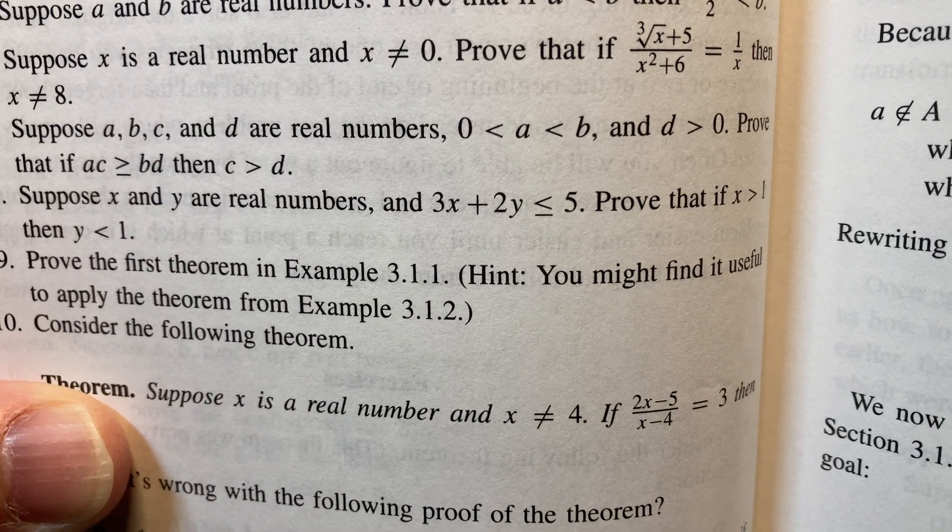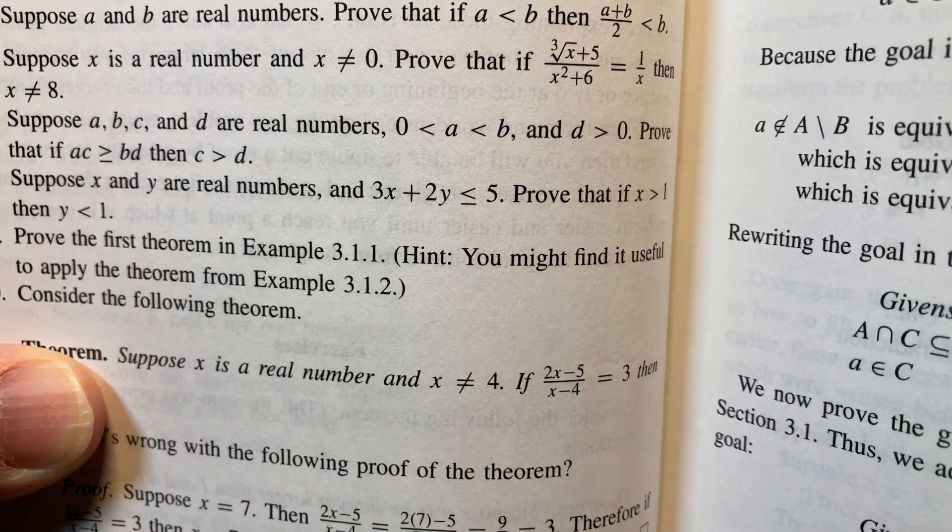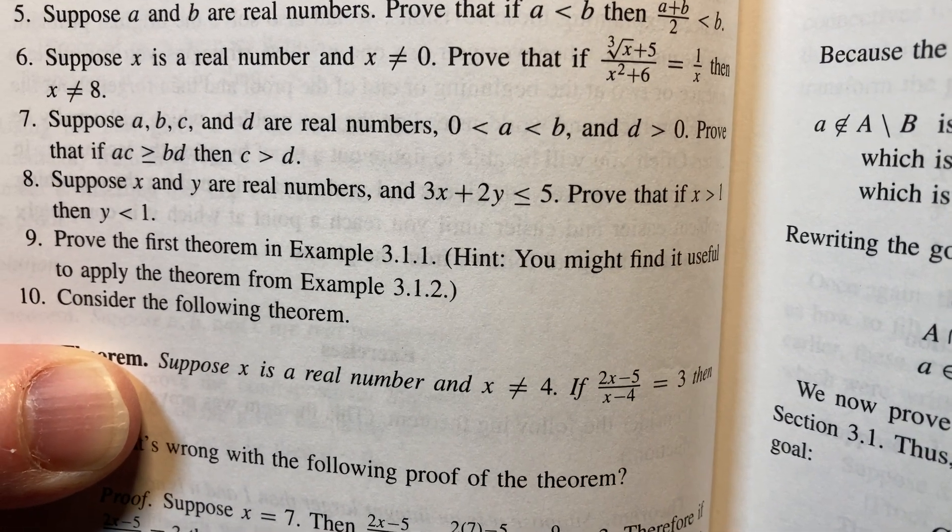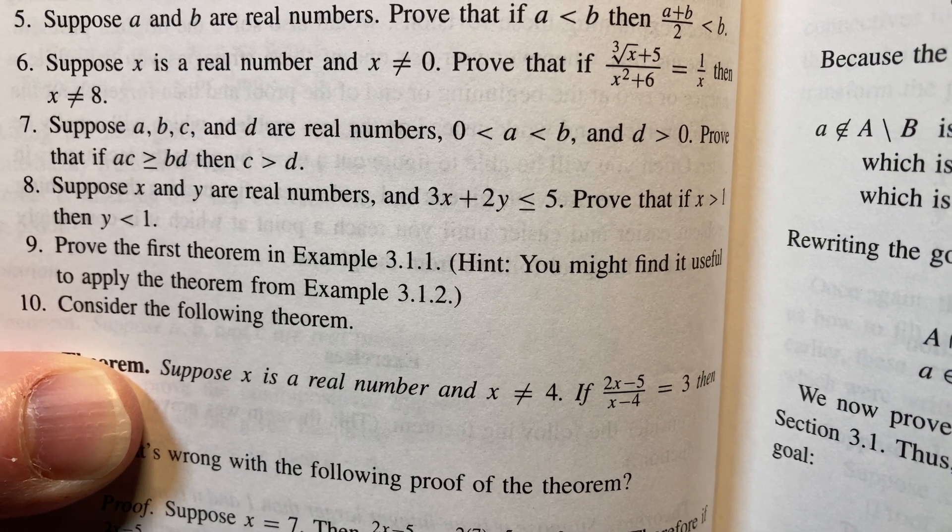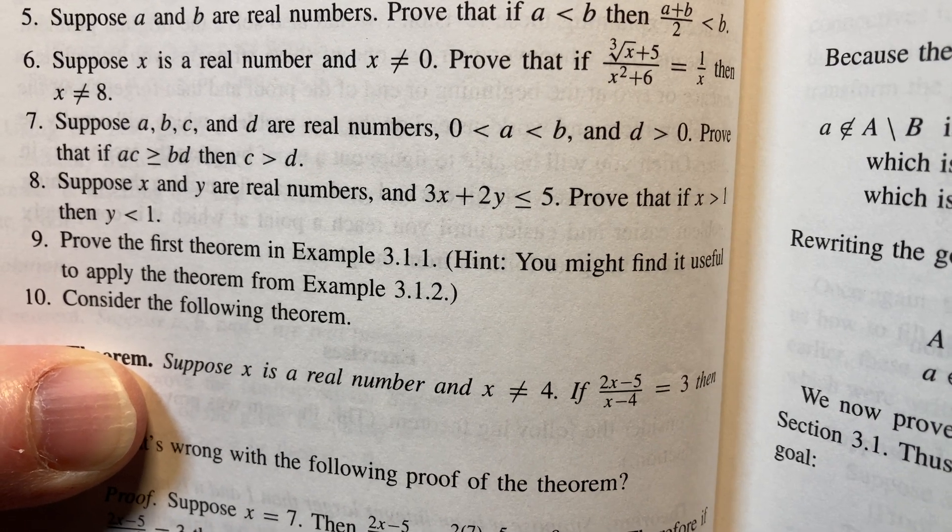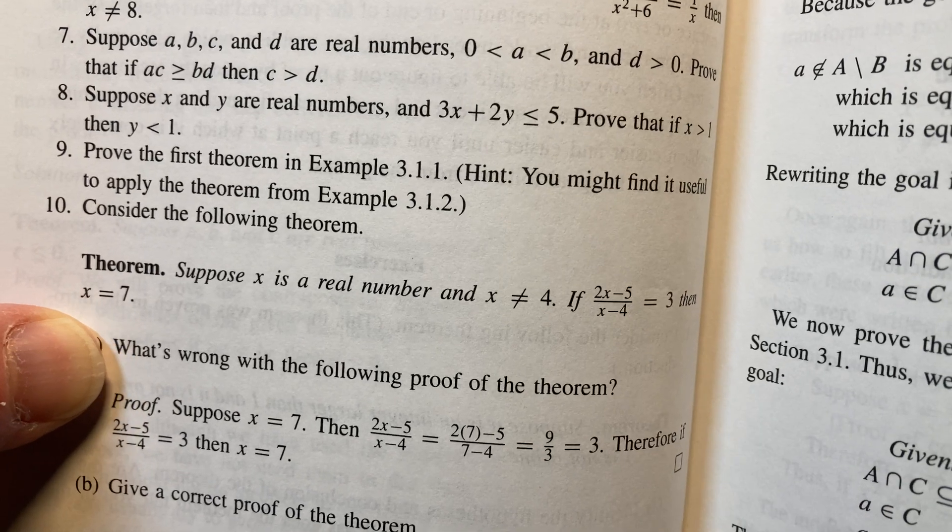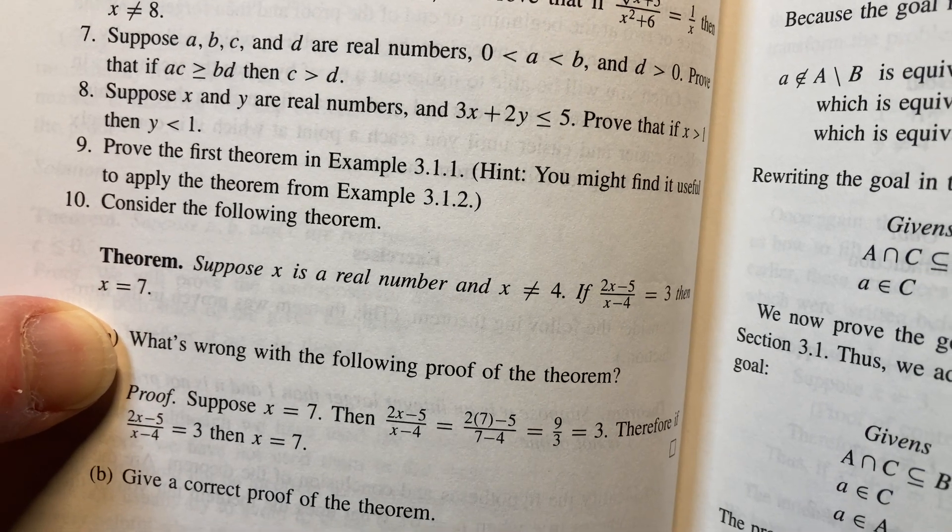Suppose A, B, C, and D are real numbers, and A is less than B and D is greater than 0. Prove that if AC is greater than or equal to BD, then C is greater than D. These look fun, right? I just want to work some of these out, you know. And so that's the cool thing.